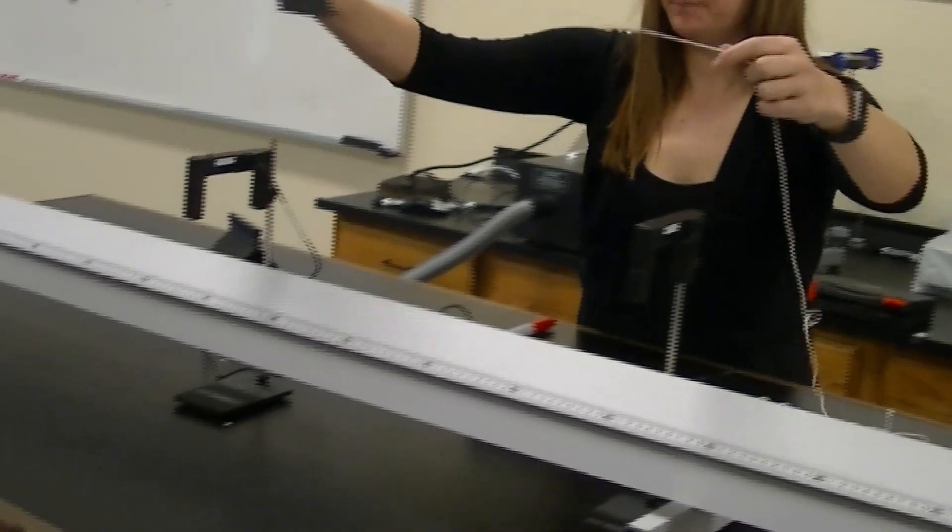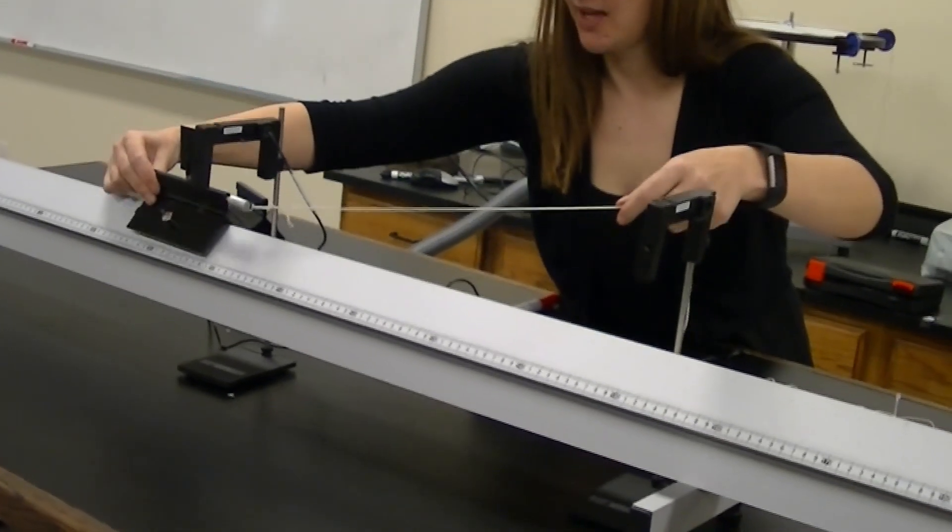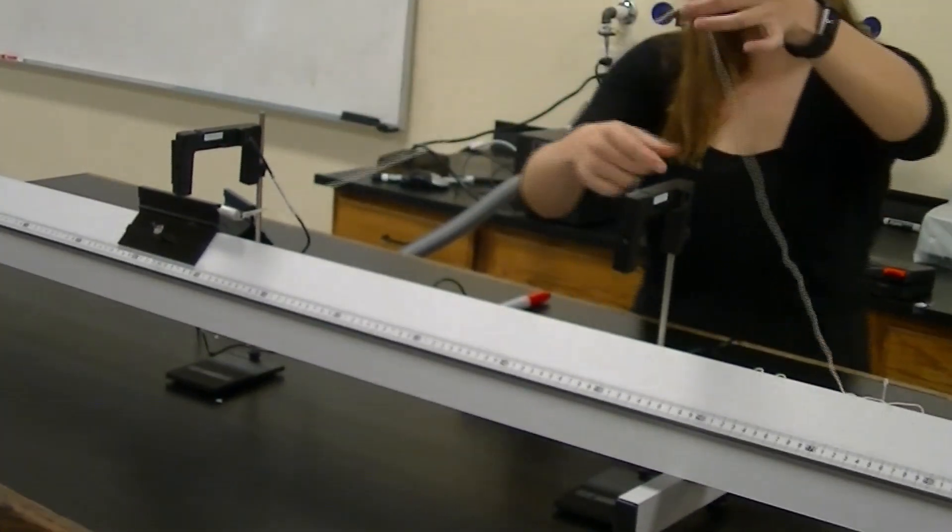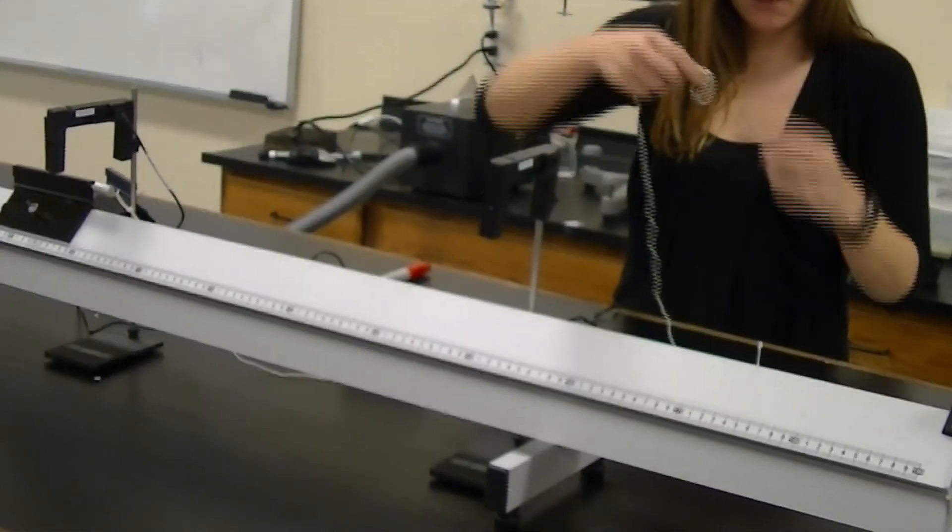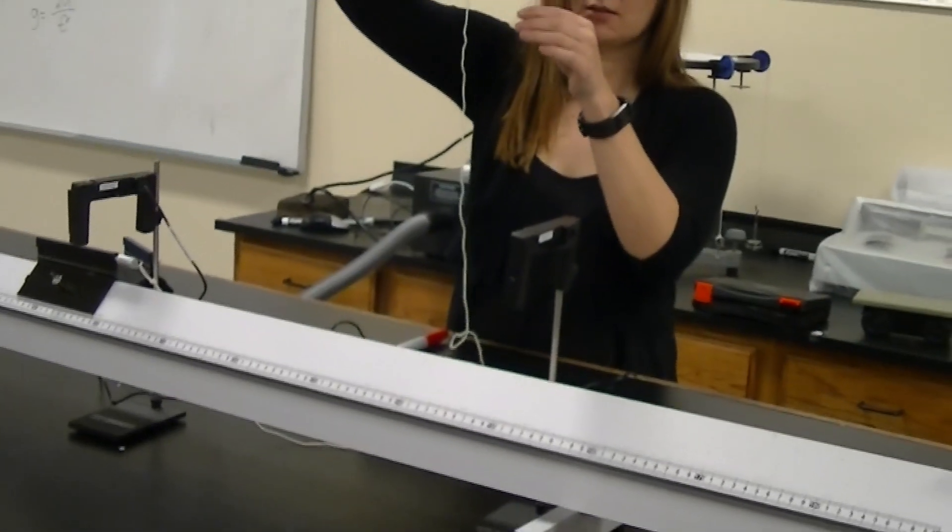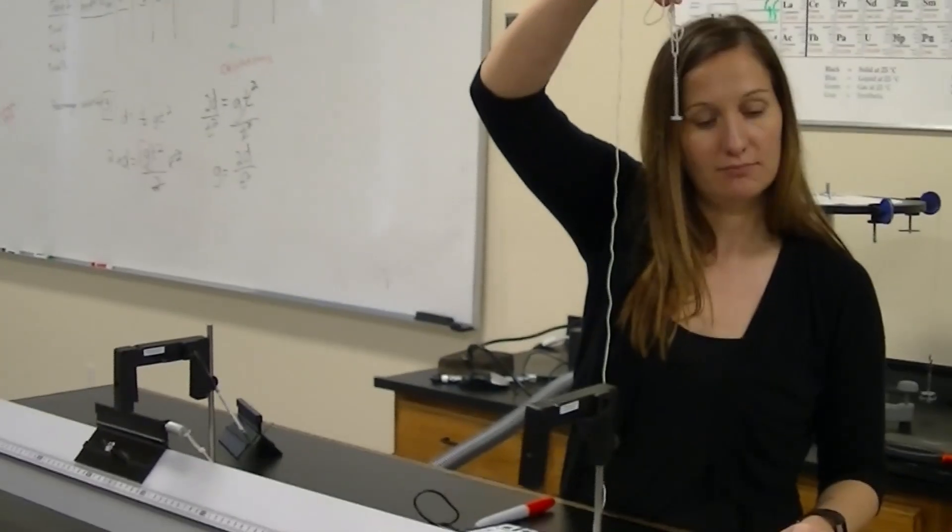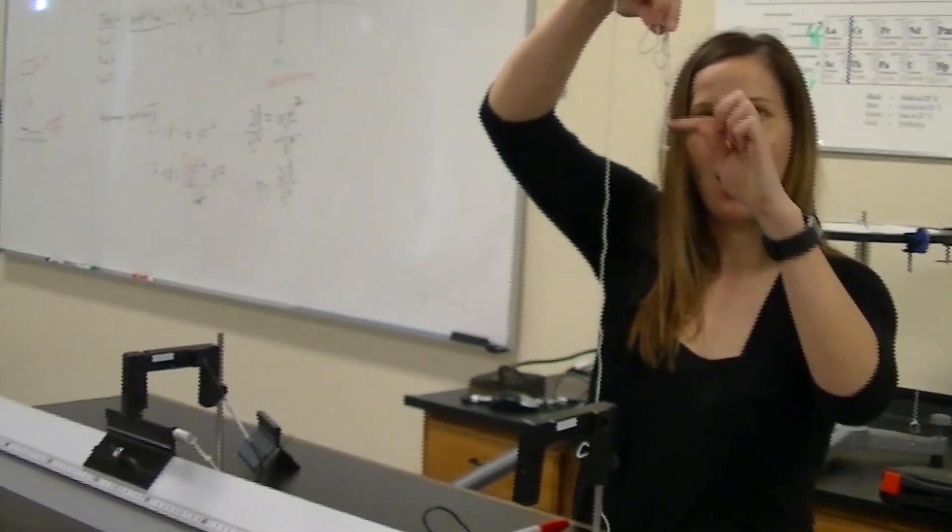So the glider is going to be placed on the air track. Notice this glider has a rope attached to it, a little string here. At the end of the string, we're going to be attaching a little hanger. So this is where we're going to be applying that hanging mass. This hanging mass is going to change throughout the experiment.